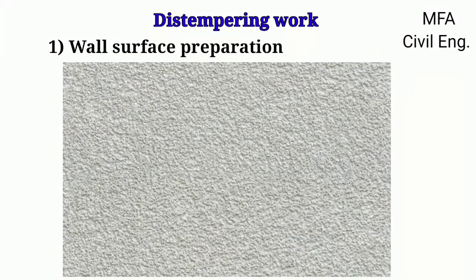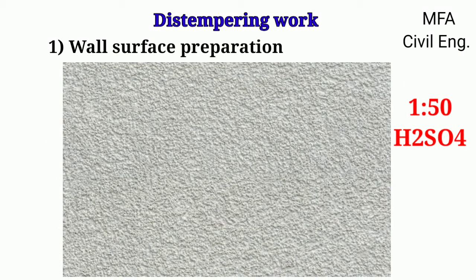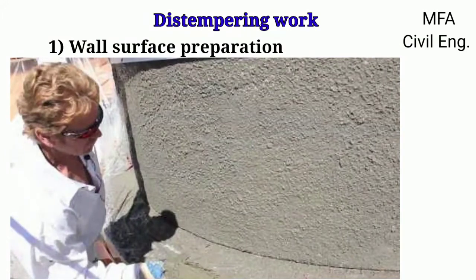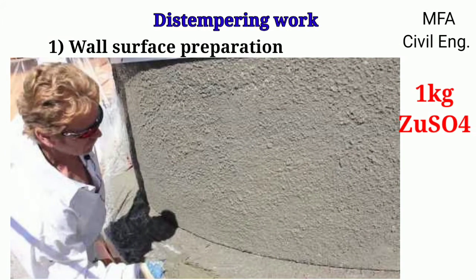A newly lime-plastered surface should be washed with a solution of 1.5% sulphuric acid, kept for 24 hours, and then washed with clean water. In the case of a newly cement-plastered surface, it should be washed with a solution made of 1 kg of zinc sulphate and 10 liters of water, and then the surface is kept for drying.